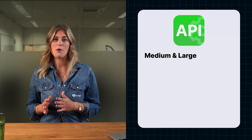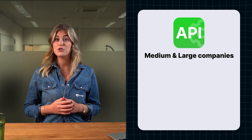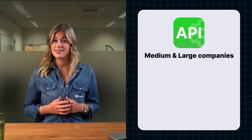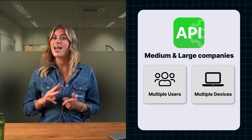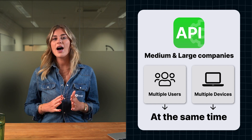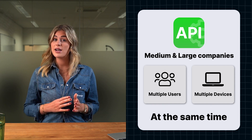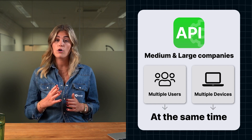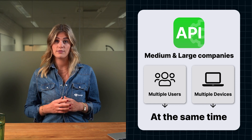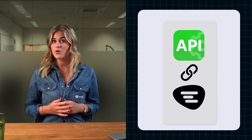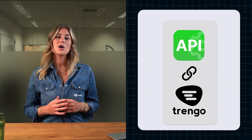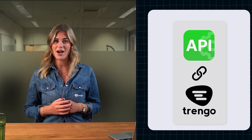The WhatsApp Business API is created for medium to large companies. The API allows you to use WhatsApp Business with multiple users on multiple devices at the same time. The API needs to be integrated into business software before you can use it, which is why you need a third-party service, such as Strango, to start working with the WhatsApp Business API.